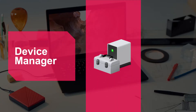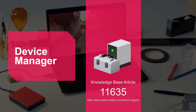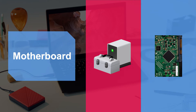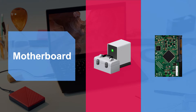The first approach examines the problem at the operating system level. We will check Windows Device Manager for any unknown devices. The way you access Device Manager may vary depending on which version of Windows you're running. If you're not sure, visit the WD website and search for Knowledge Base Article 11635 for how to access Device Manager in Windows. The second approach will take us to the motherboard at the hardware level. If your drive can be seen on USB 2.0 ports but not USB 3.2 ports, then your motherboard drivers should be updated. We recommend referring to your motherboard manual or contacting your manufacturer to apply the hardware drivers as needed.